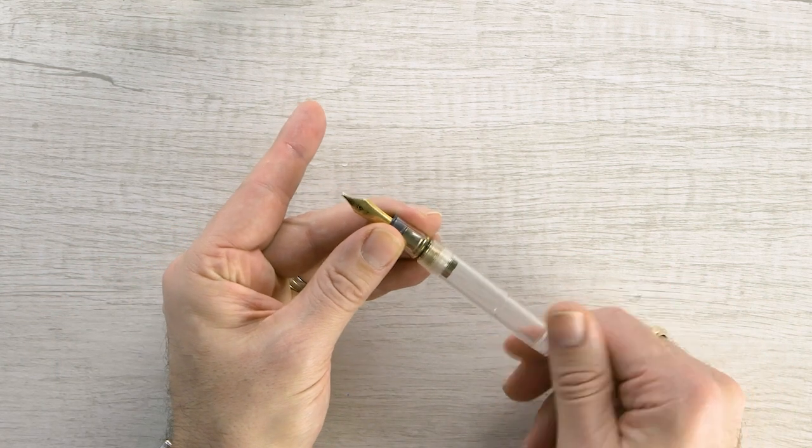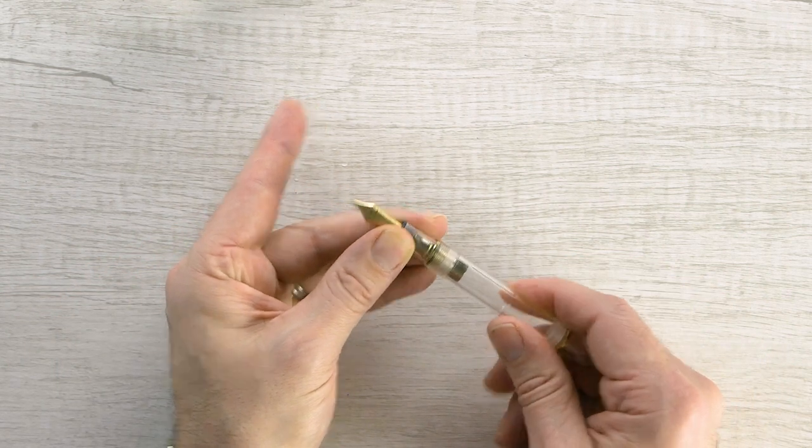I'm just going to wipe that off and my pen is clean and ready to put new ink in. So there you have it, the brand new Sailor accessories including the maintenance kit. Be sure to check us out online at andersonpens.com or our stores in Appleton and Chicago. Thanks for watching.